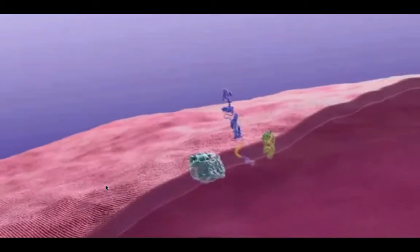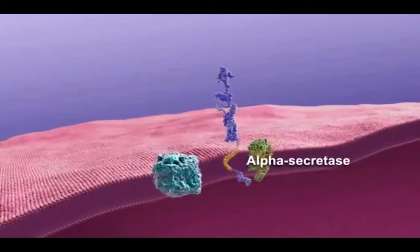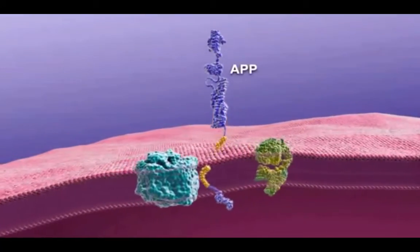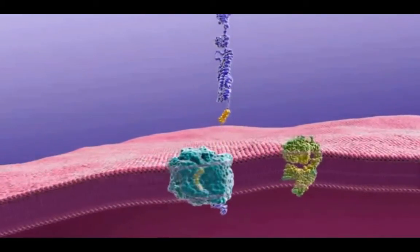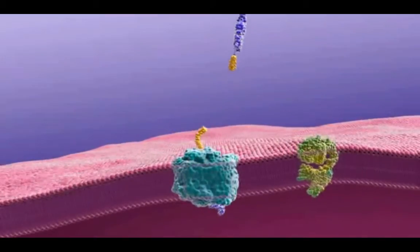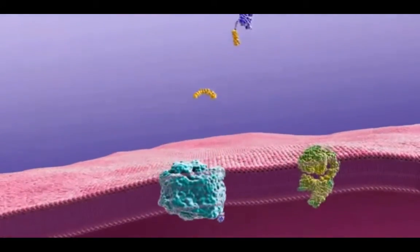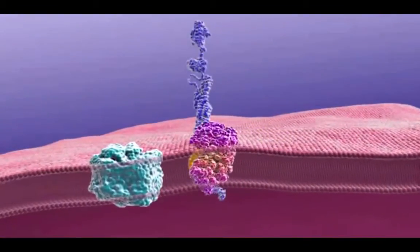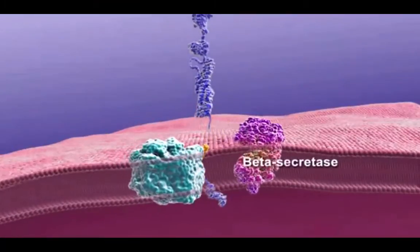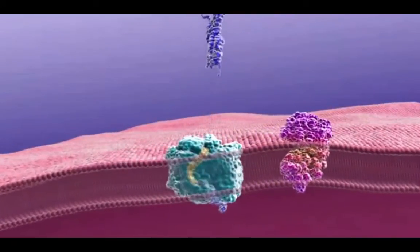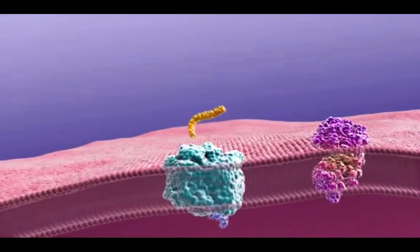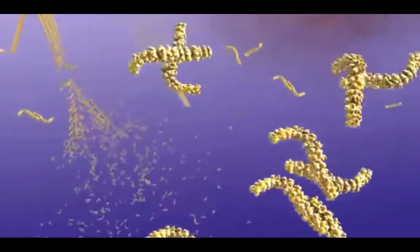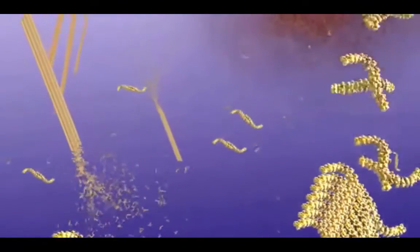Normally amyloid beta precursor protein or APP is cleaved first by alpha secretase followed by gamma secretase. The released fragments are thought to benefit the functioning of neurons. However, beta secretase cleaves APP in a different location. After subsequent gamma secretase cleavage, amyloid beta is released into the extracellular space of the brain where it can aggregate and form harmful plaques that can spread.